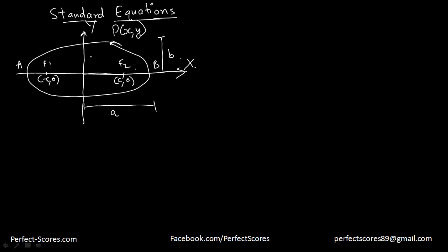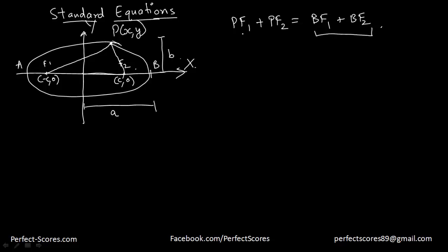Now how do we do that? If you have watched the first video on ellipse, you would know that the distance PF1 plus PF2 — the sum of these distances — is actually equal to BF1 plus BF2, which is a property of any ellipse: the sum of distances from two focus points for all points is a constant equal to 2A. BF1 is equal to A plus C and BF2 is equal to A minus C, and once we add BF1 and BF2, we get 2A.